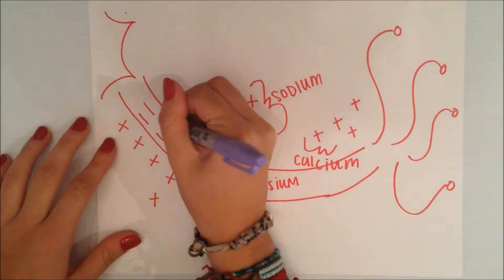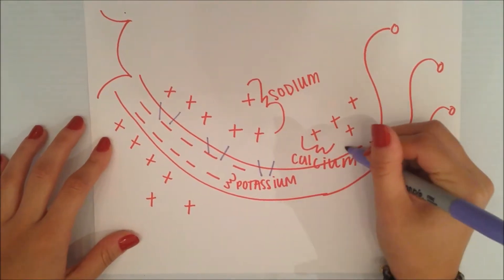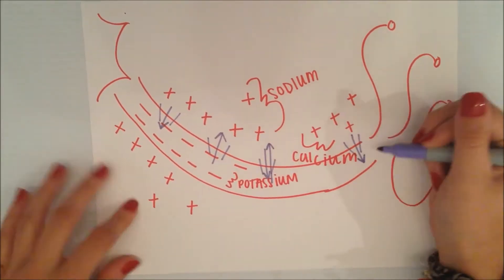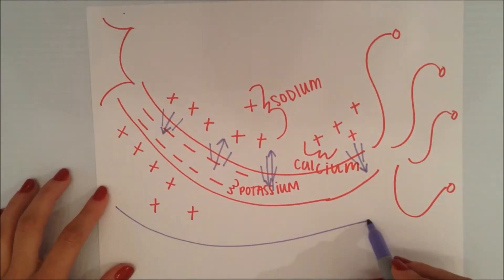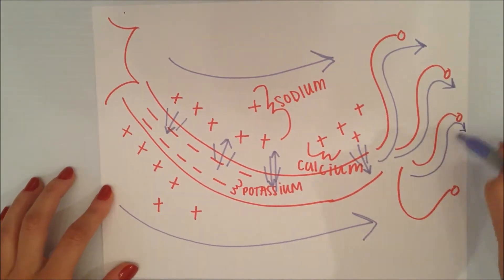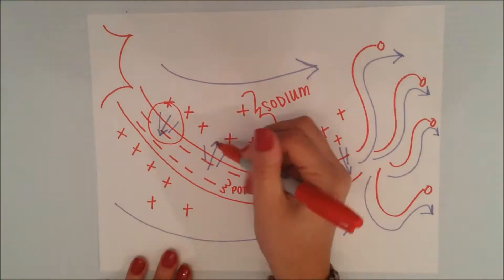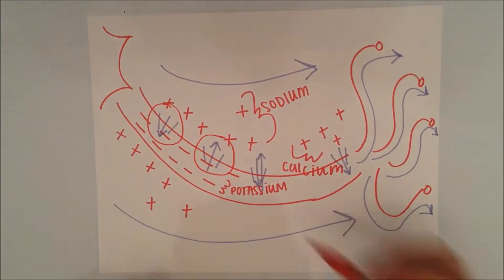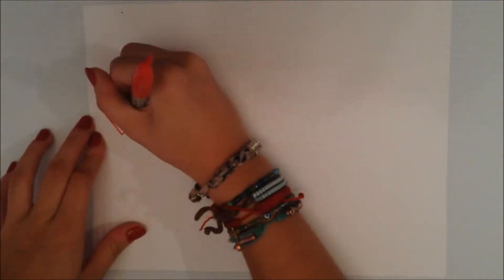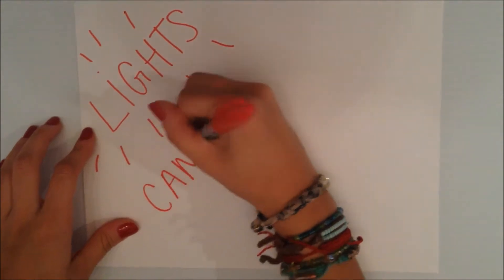Now let's say something happens. Maybe you step on something sharp. Maybe you see something scary. The point is, there is a stimulus — something important that your neurons can respond to. The stimulus sets events in motion. Along the cell membrane, there are gates and pumps that react to the electrical current going through the axon.